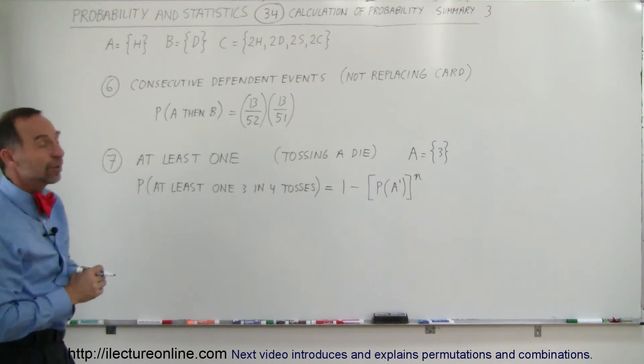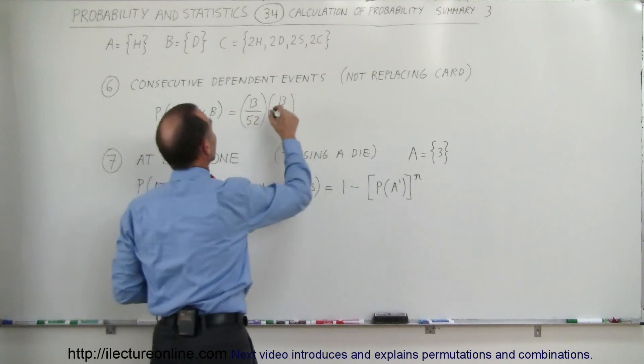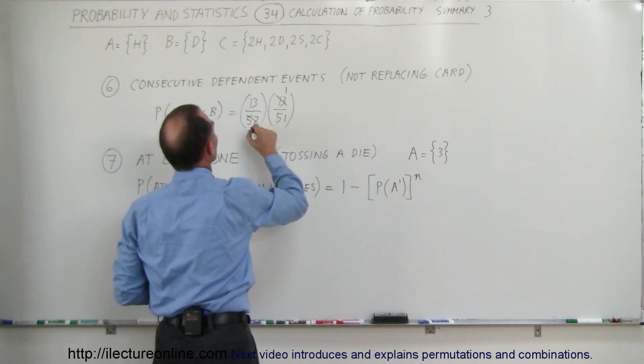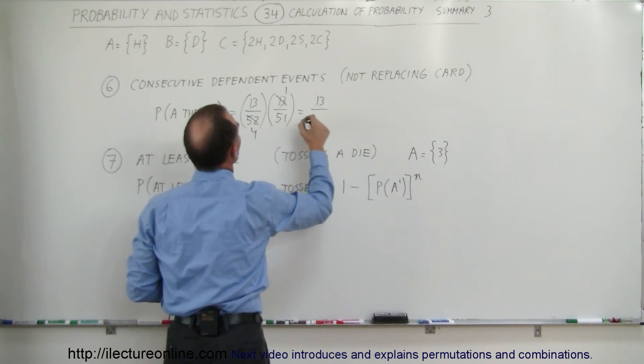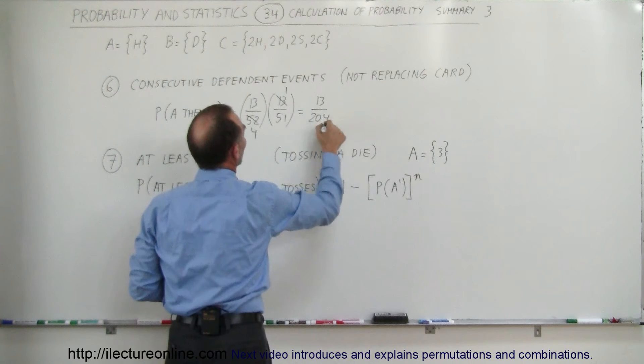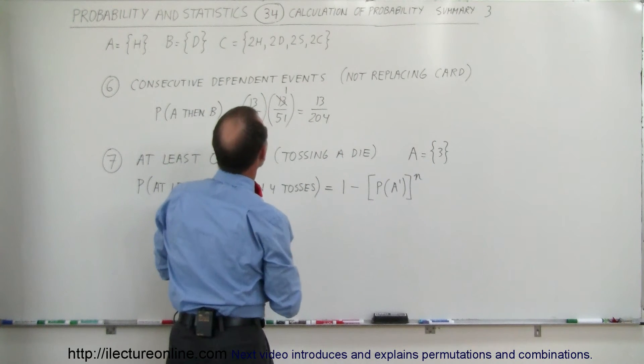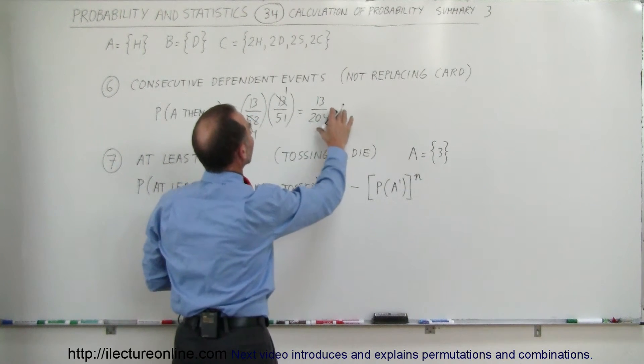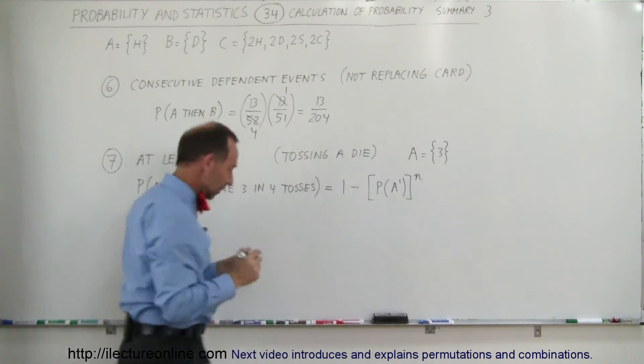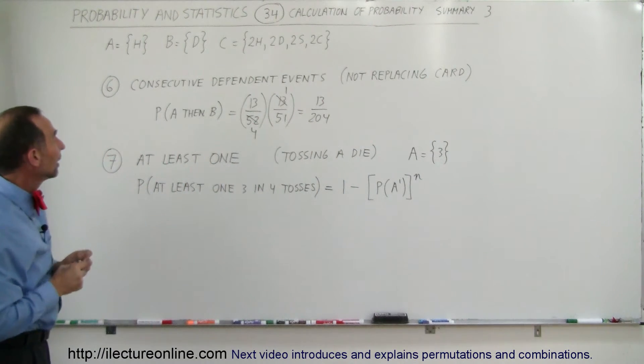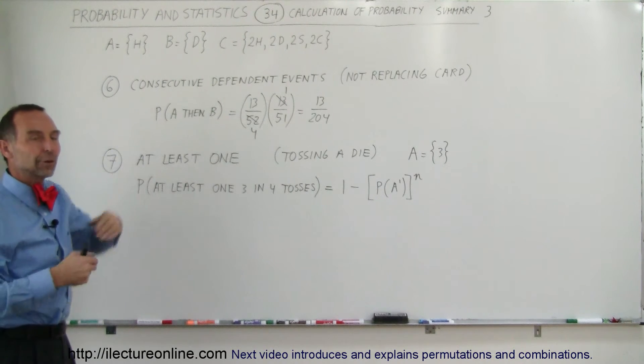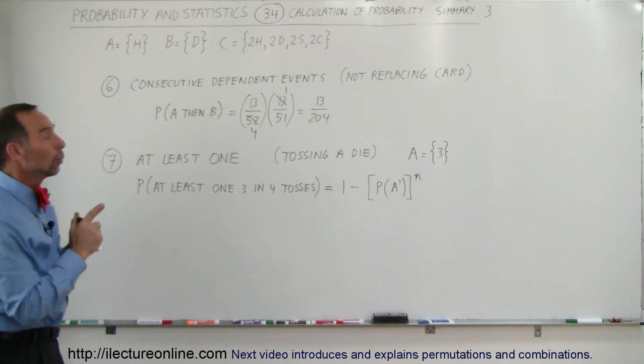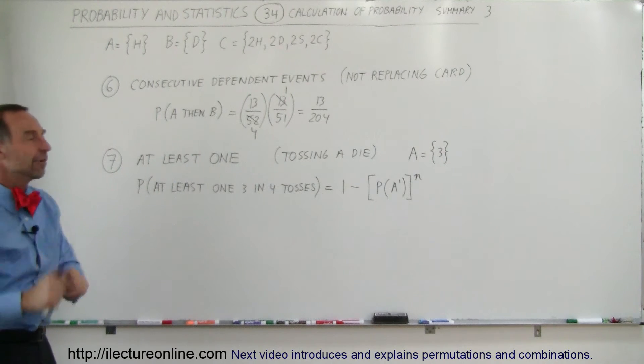All right, so how do we simplify that? Well, 13 goes into 52, 4 times, so this becomes 13 divided by 204. Yep, that is correct. And I don't think we can simplify that any further. And so this would be the probability of A occurring and then B occurring in two consecutive events when we're not replacing the card so that the events are dependent.